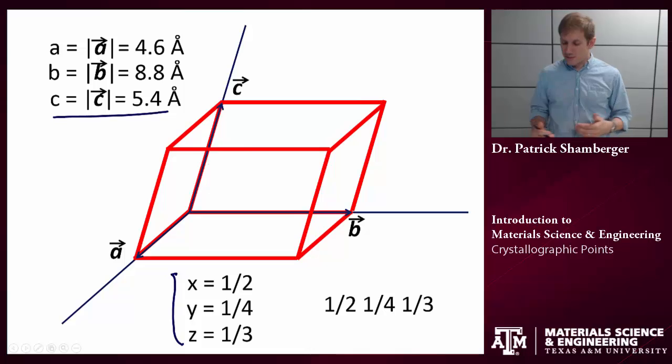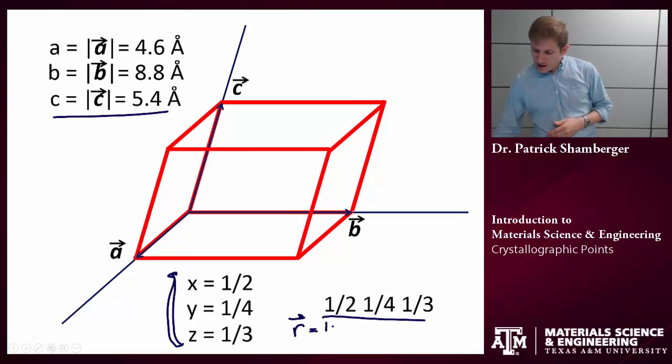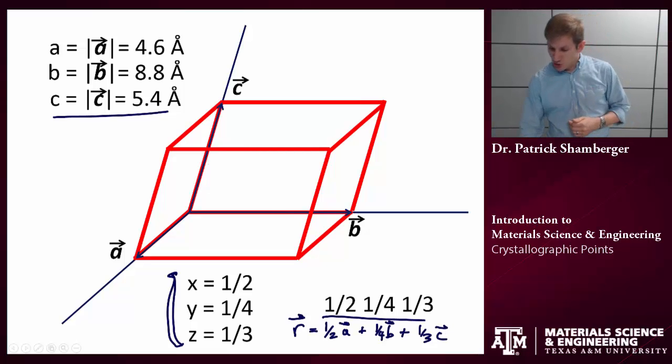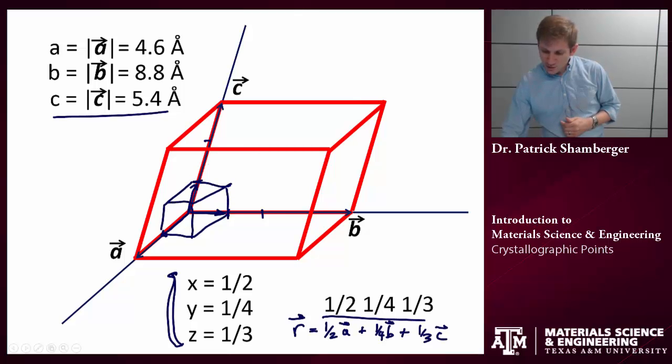But I'm also giving you, in this example, the fractional position of this point. Usually this would just be written one-half, one-quarter, one-third. Or sometimes it's written separated out. X equals one-half, Y equals one-quarter, Z equals one-third. Now, remember, what this means is you have some vector. And this vector describes the position of the atom, or whatever we're situating in the lattice, in terms of the three principal vectors. We are going to look at one-half of A, one-quarter of B, and one-third of C. And this is going to describe the location of this position within the lattice. That position is sitting right about here.